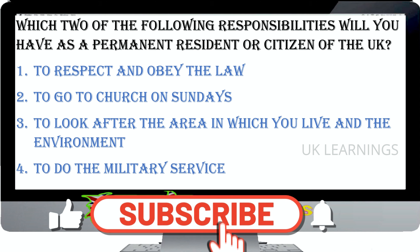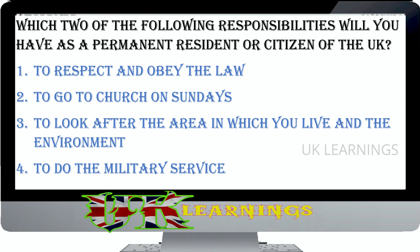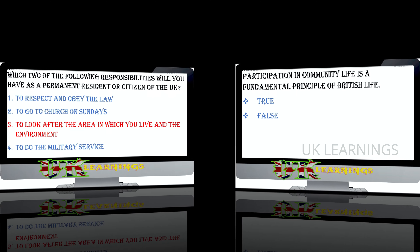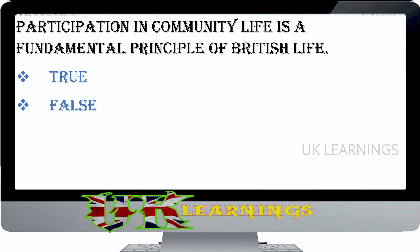Which two of the following responsibilities will you have as a permanent resident or citizen of the UK? To respect and obey the law, to go to church on Sundays, to look after the area in which you live and the environment, to do military service. The correct answers are to respect and obey the law and to look after the area in which you live and the environment. If you wish to be a permanent resident or citizen you should respect and obey the law, respect the rights of others, treat others with fairness, look after yourself and your family, and look after the area in which you live and the environment.